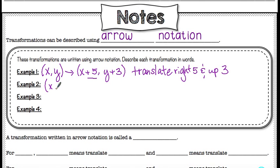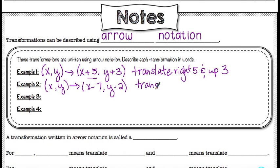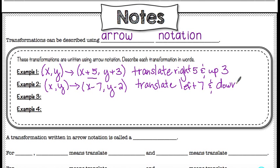Let's look at another example. X comma y with an arrow, x minus seven, y minus two. Because I see x minus and y minus, this is a translation. X minus is the opposite of x plus — x plus was right, so x minus means left. Translate left seven. Y minus is the opposite of y plus — y plus means up, so y minus means down two.